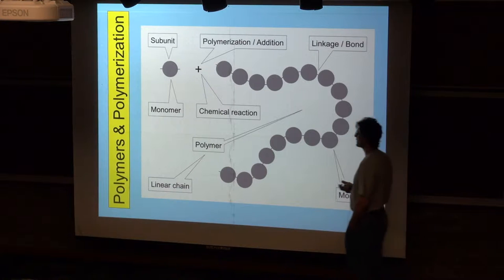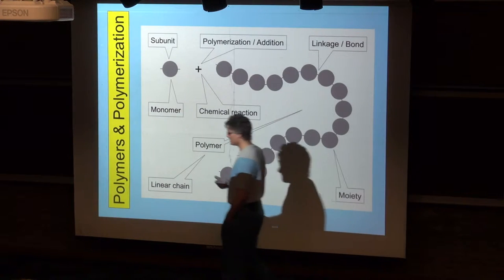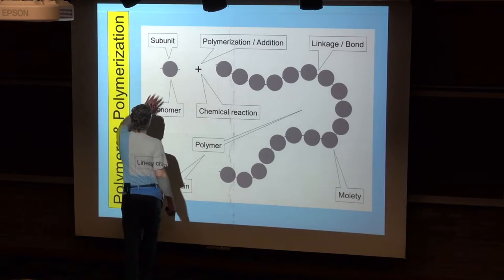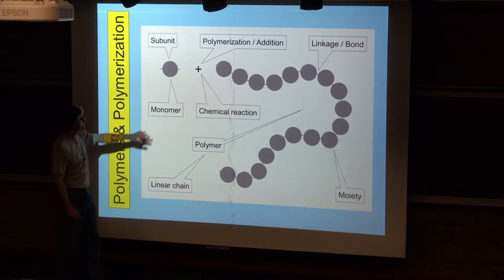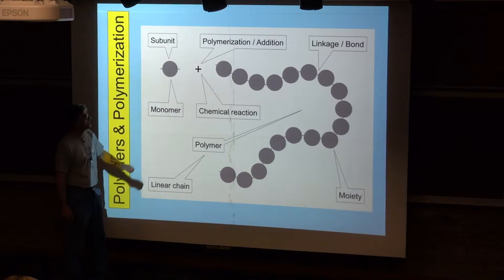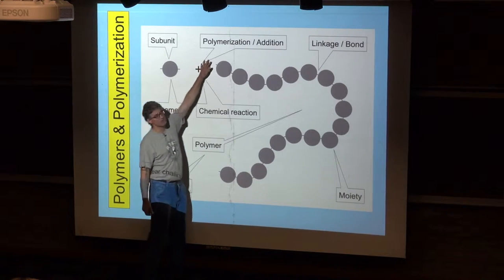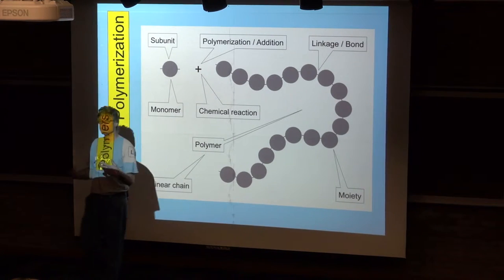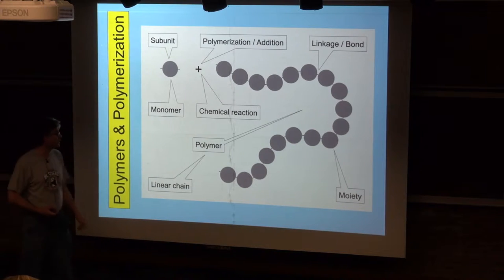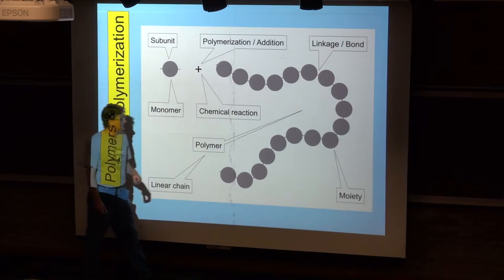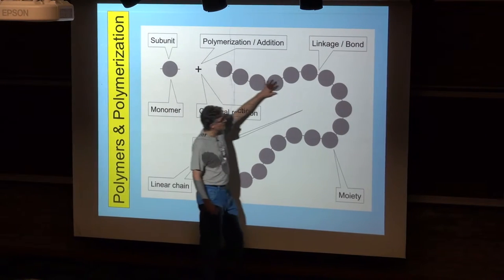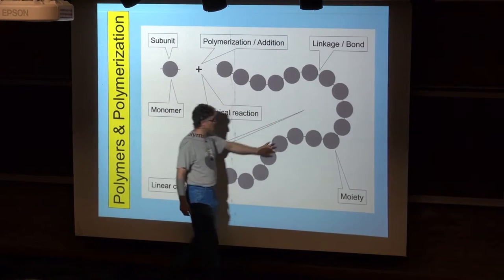And polymers work like is shown up here. You have individual units of polymers called subunits, and we can also describe these as monomers. You've got some kind of polymerization step, which involves the addition of the subunit to some larger structure. The addition process is a chemical reaction, and the polymer is a string of these subunits.